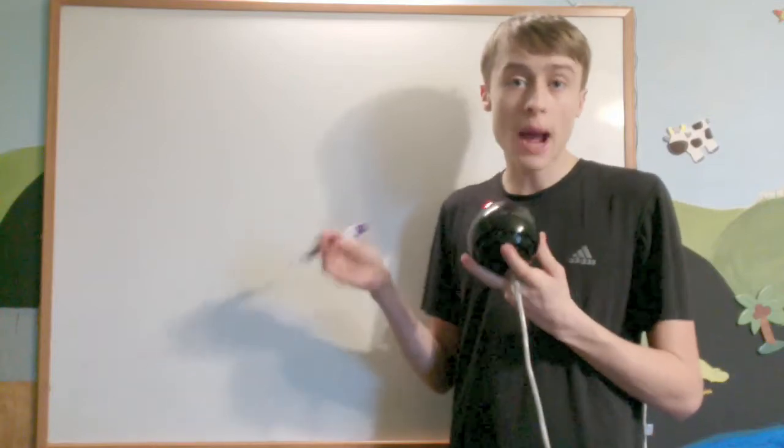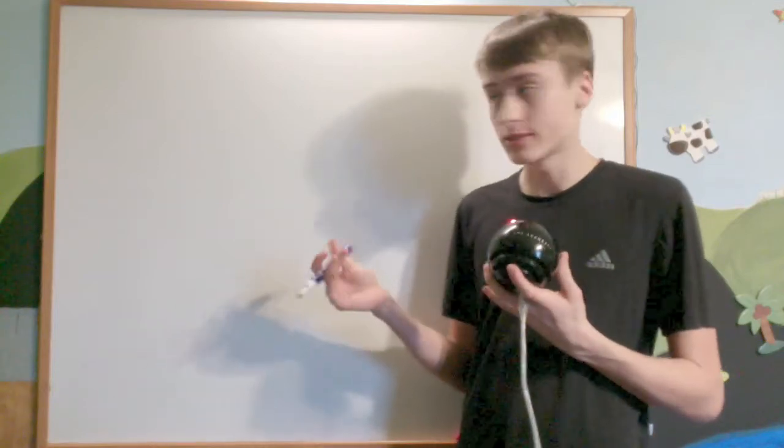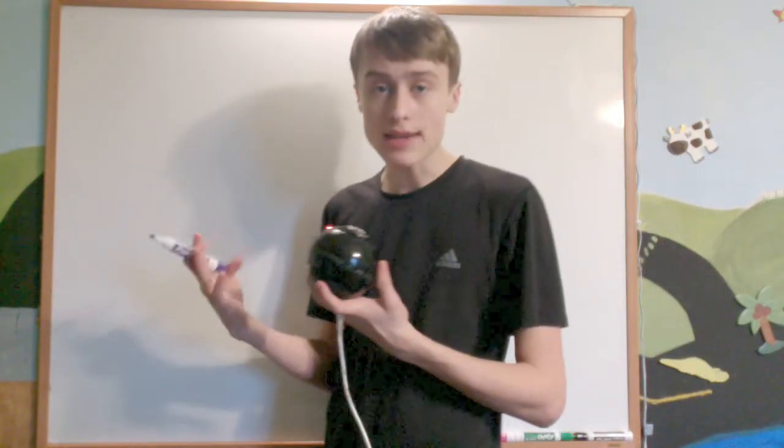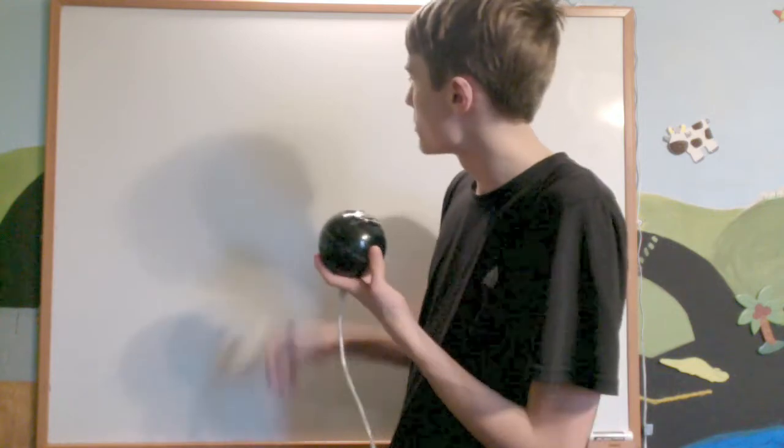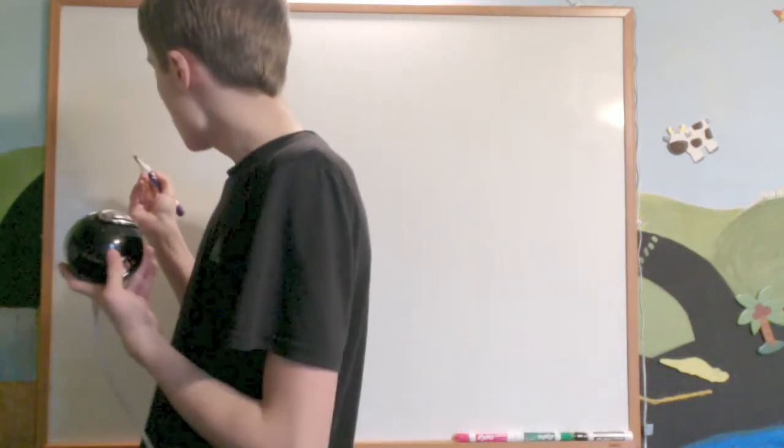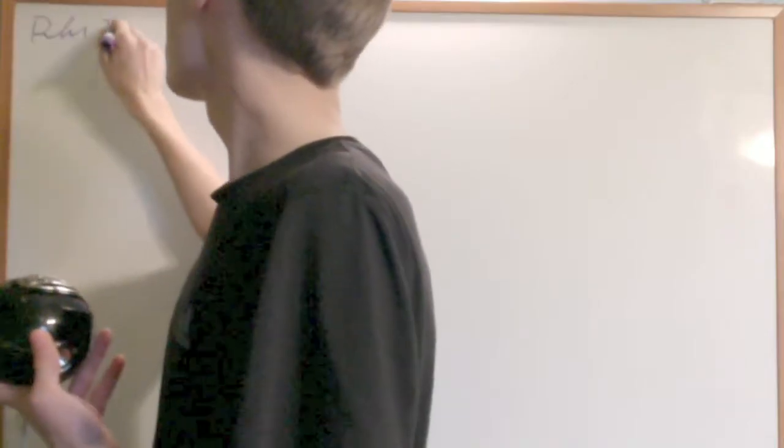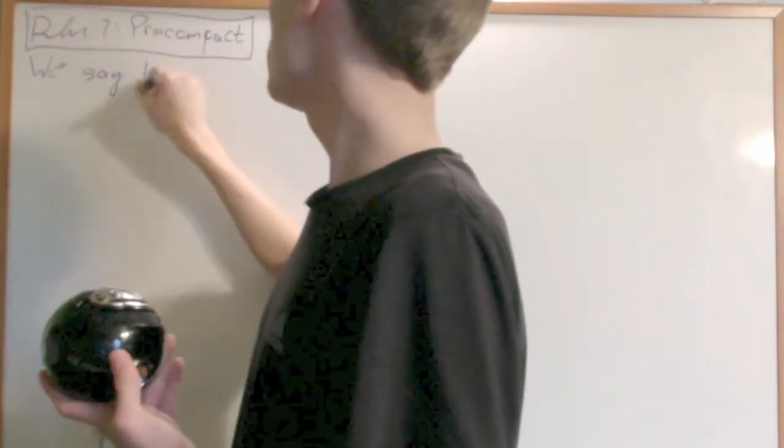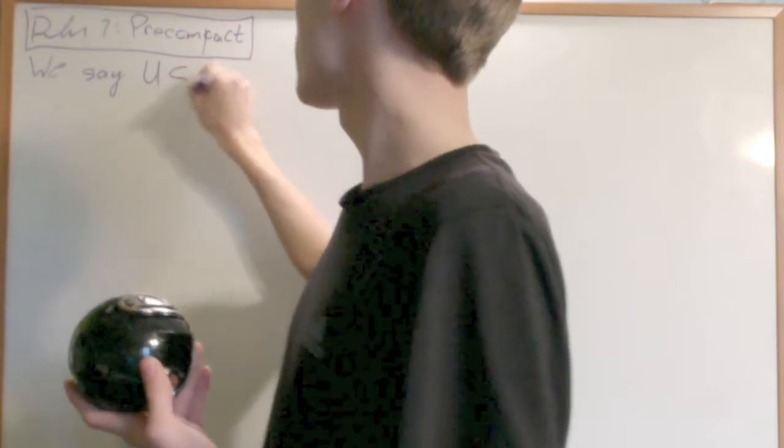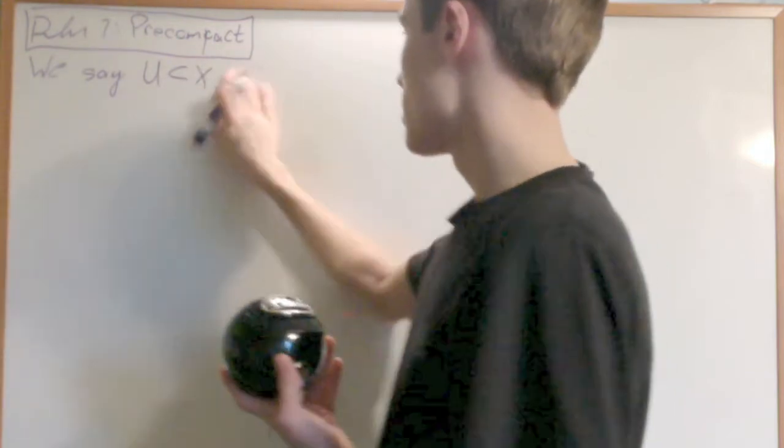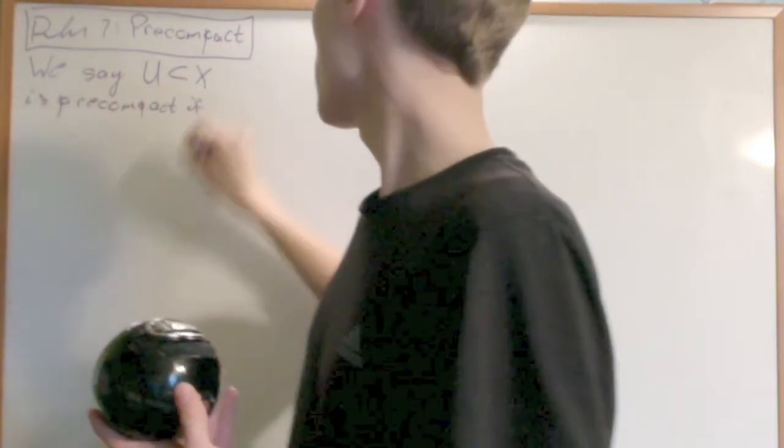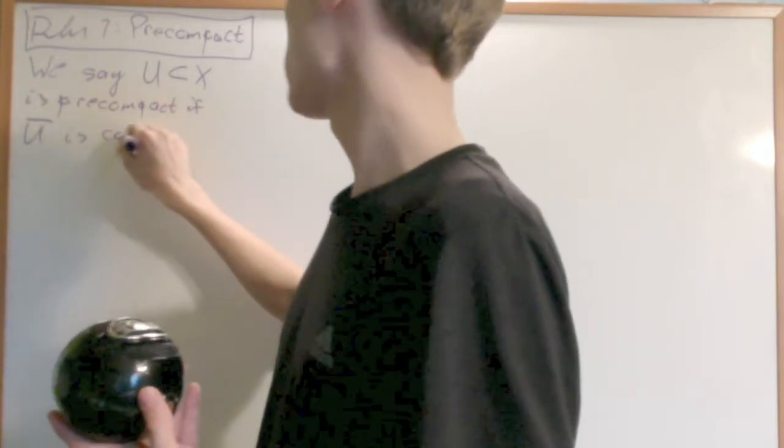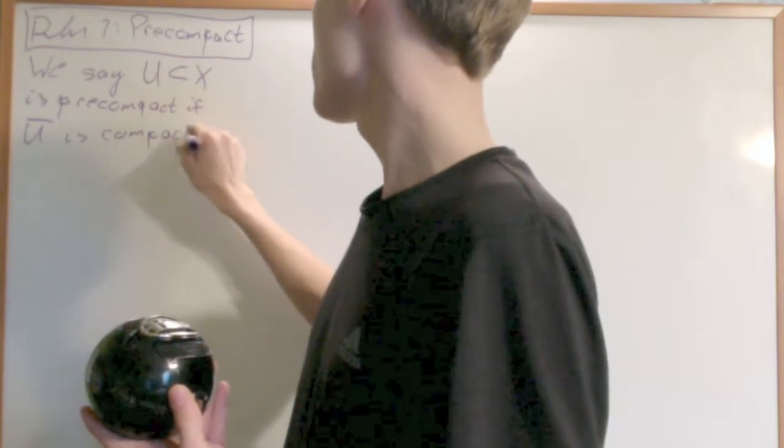In this video I'll be introducing some topological properties of manifolds. The first property I'm going to introduce is that it has a basis of precompact open sets. What does that mean? Well, the definition of precompact: we say U, a subset of X, is precompact if U bar is compact, if the closure of U is compact.